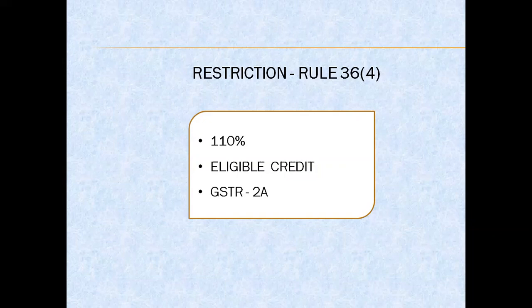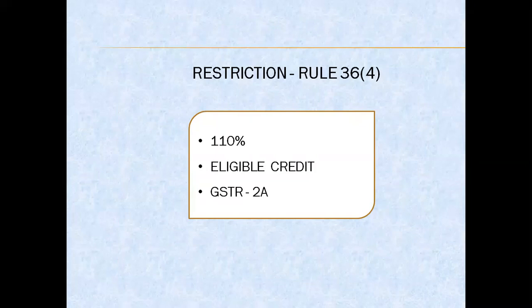Having understood these two forms, let's look at the restrictions under Rule 36-4. After the insertion of this rule, one cannot take ITC without examining the credit available in Form GSTR-2A. Under Rule 36-4, ITC pertaining to input invoices and debit notes available to the registered dealer for the tax period cannot exceed one hundred and ten percent of the eligible credit available in its Form GSTR-2A.